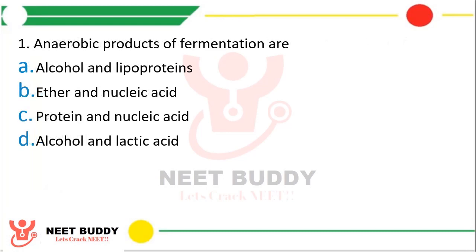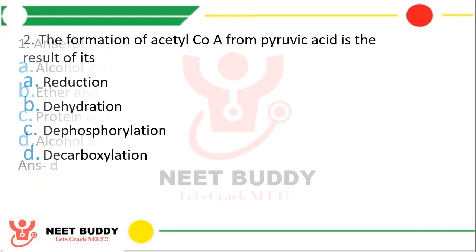Question 1 (Set 2): Anaerobic products of fermentation are — option A alcohol and lipoproteins, option B ether and nucleic acid, option C protein and nucleic acid, or option D alcohol and lactic acid. The correct answer is option D — alcohol and lactic acid.